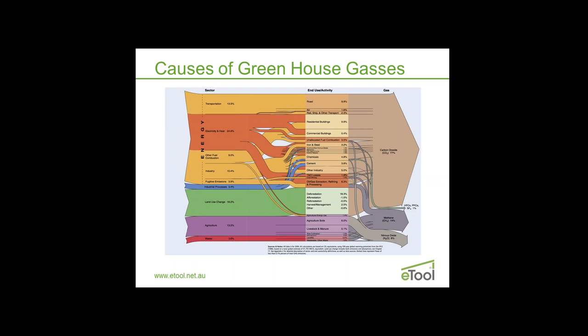Here's a Sankey diagram of the carbon economy. On the right side you've got greenhouse gases contributing to climate change: carbon dioxide, methane, nitrous oxide. On the left you've got the man-made causes of these gases — things like transport, electricity and heat, making materials, manufacturing, land-use change, agriculture, food, and waste.